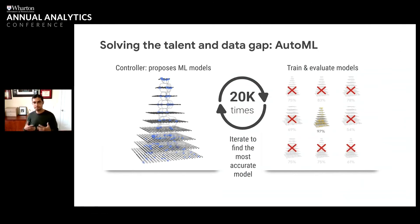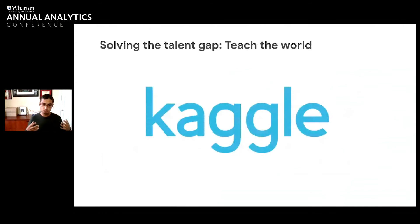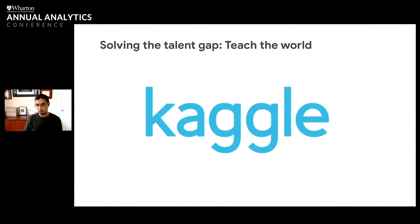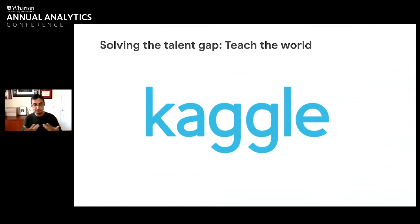Another thing is that we need to be able to teach the world about machine learning and AI. More and more schools are emphasizing science programs, but this needs to be emphasized for people that are out of college as well. One of the things we've found successful is a community called Kaggle, which is part of Google Cloud, where we've tried to bring together over six million data scientists and have them be able to learn from each other. Things like that are going to be necessary to solve that talent gap.